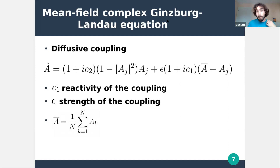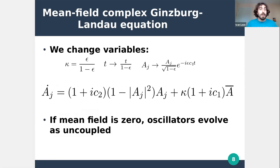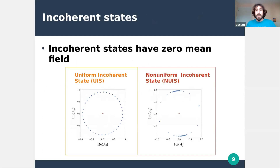This is another way of writing the mean-field version of the diffusion equation. To perform quasi-phase reduction, we do a change of variables: we rescale the coupling, the time, and the complex variable a, going to a rotating frame. In this rewritten equation, if the coupling kappa is small or zero, oscillators are uncoupled; and if the mean field is zero, oscillators also behave as uncoupled. States with zero mean field are incoherent states.